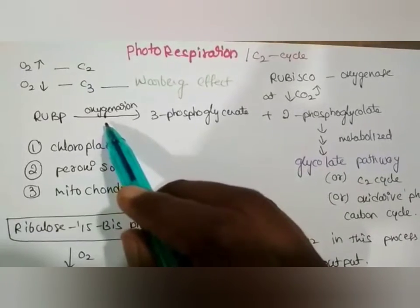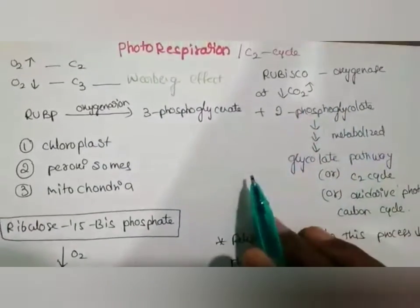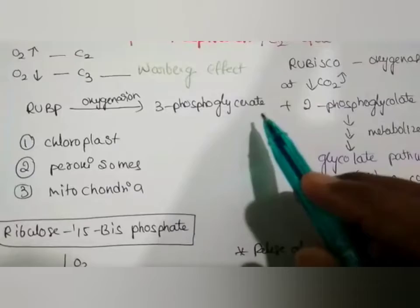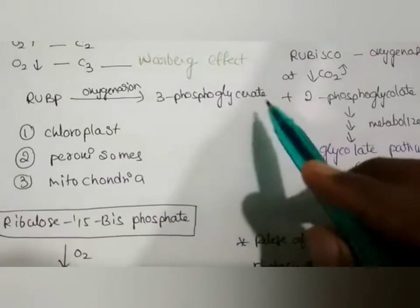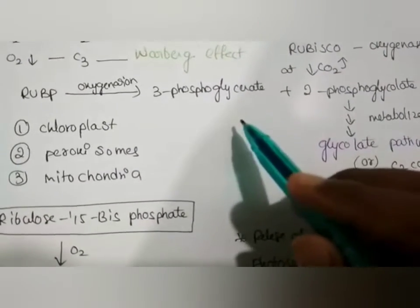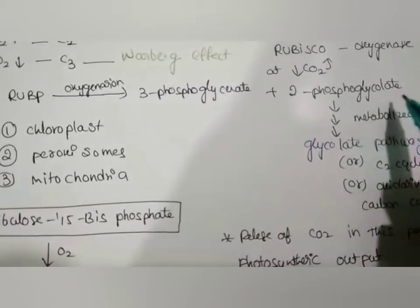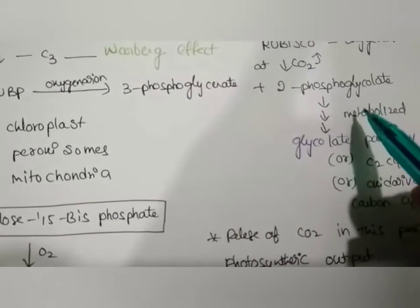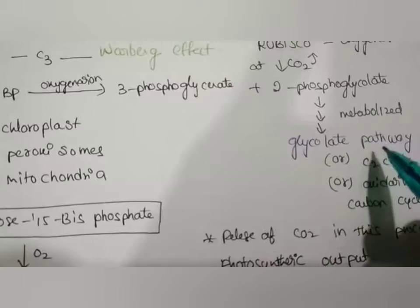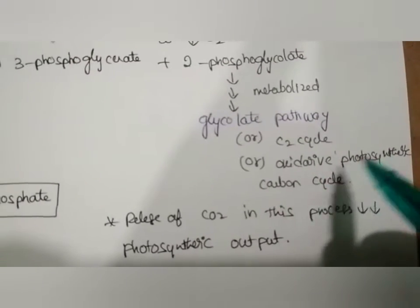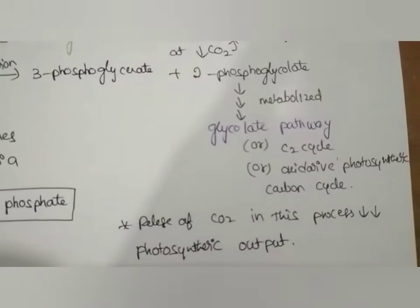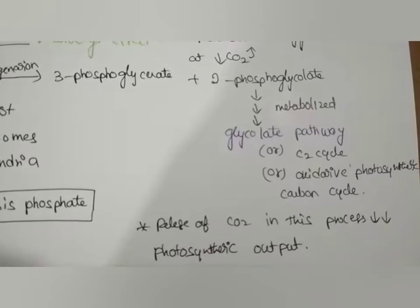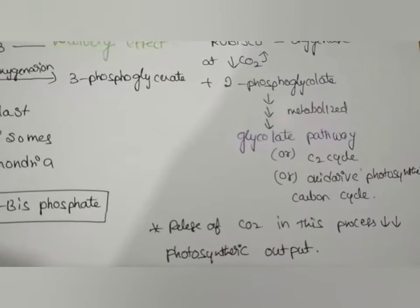Glycolate is produced by the oxygenation reaction with the help of rubisco enzyme. Here, three phosphoglycerate is formed, which is a three-carbon compound. This is metabolized, and two phosphoglycolate, which is a two-carbon compound, is produced. Phosphoglycolate is not metabolized by the C3 cycle, so it enters into the glycolate pathway, also called the oxidative photosynthetic carbon cycle, which is photorespiration. This two-carbon compound is metabolized by the glycolate pathway.